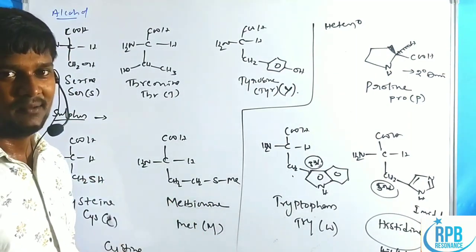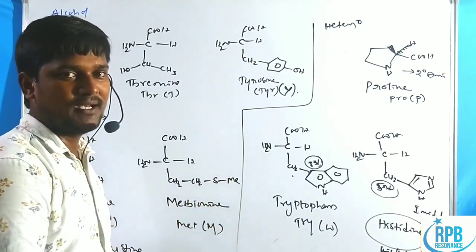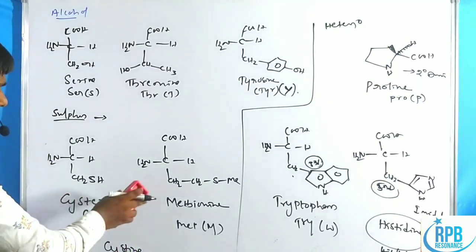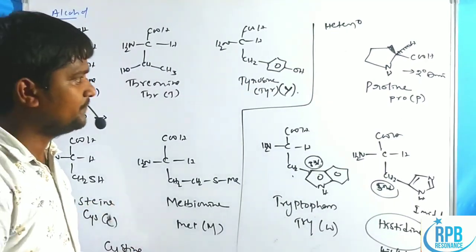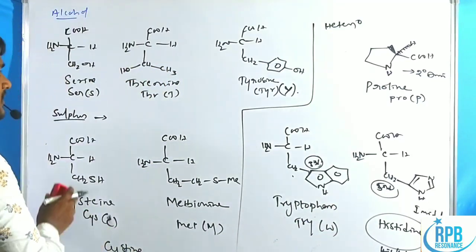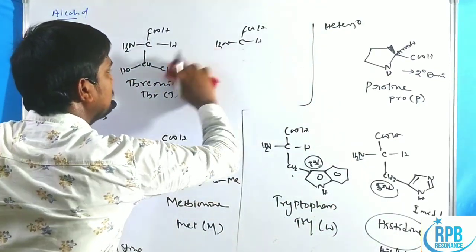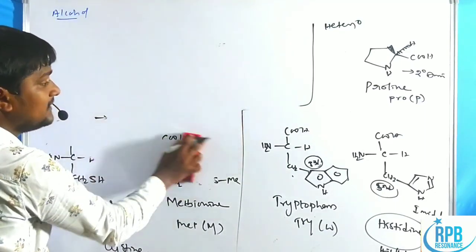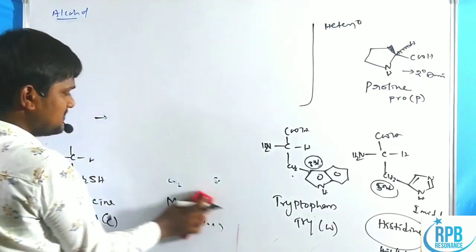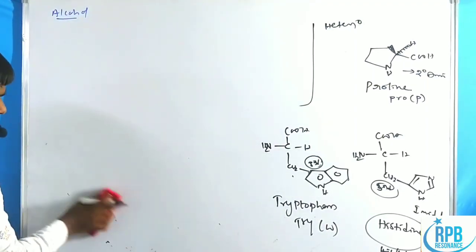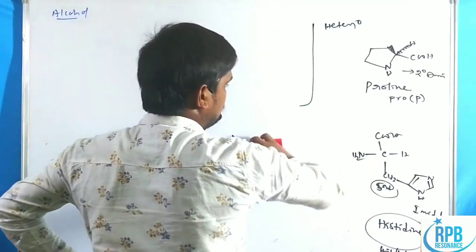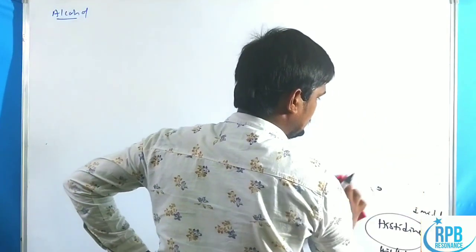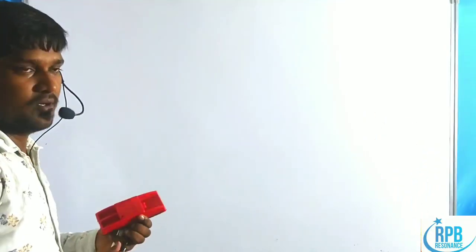In total: five aliphatic amino acids plus one aromatic equals six; plus three oxygen-containing equals nine; plus two sulfur-containing equals eleven; plus three heterocyclic equals fourteen amino acids discussed. Six remain — those are the acidic and basic amino acids. Note that histidine is also a basic amino acid.